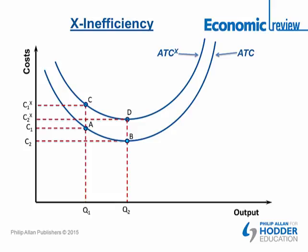So that's what X-inefficiency is. You might think about how X-inefficiency differs from productive efficiency in economics, and how it differs from allocative inefficiency. There's also a linked article on the brewing merger in the e-review which refers to this concept. Hopefully you found that video useful — thank you very much.